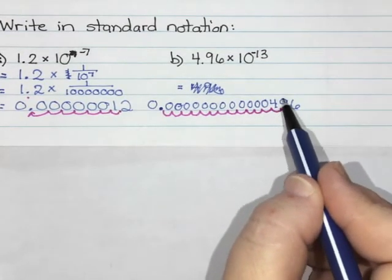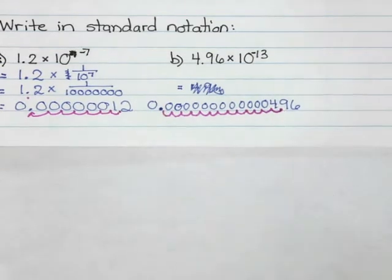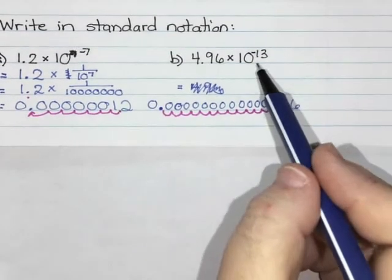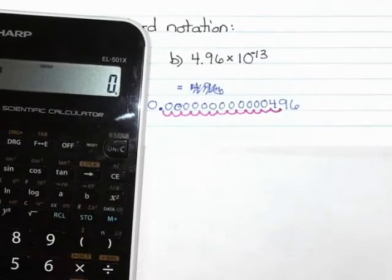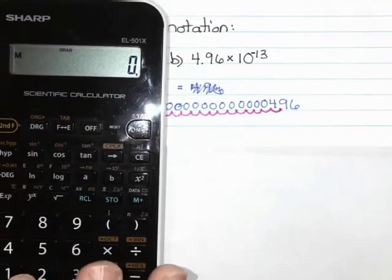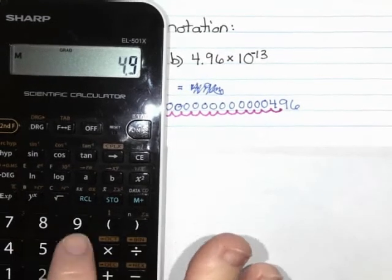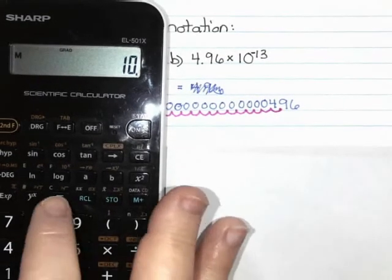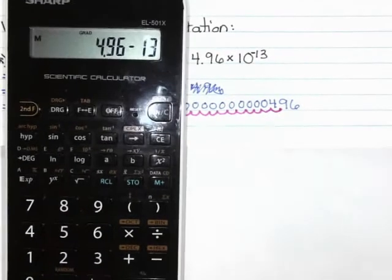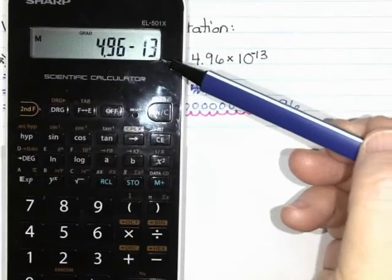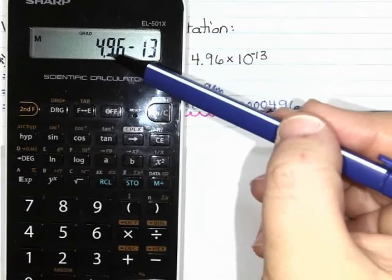Now this one here probably wouldn't show up on my calculator because my calculator can only show 10 digits. So if I try to do 4.96 times 10 to the power of negative 13, it actually gives me scientific notation back. So on my calculator it shows 4.96 and then it shows negative 13.